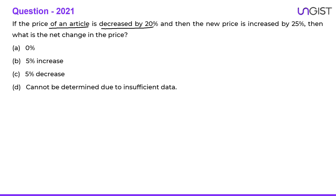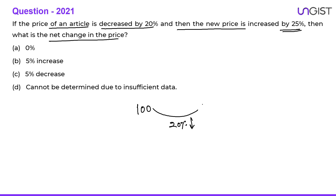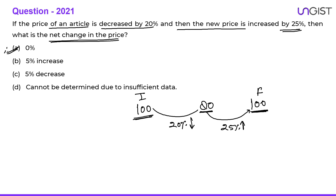Next question: If the price of an article is decreased by 20% and then the new price is increased by 25%, what is the net change? Assume original price = 100. Decrease by 20% → price becomes 80. Increase 80 by 25% → 25% of 80 = 20, so price becomes 100 again. Net change = 0%. There is no change in the price.